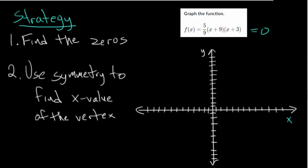And once we've found the x value of the vertex, all we need to do is plug it into the function. And that will give us the y value of the vertex. And at that point, we have the vertex and two zeros, and we can just complete our curve.